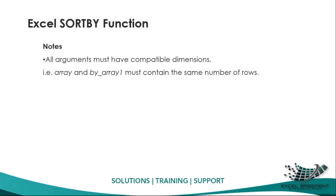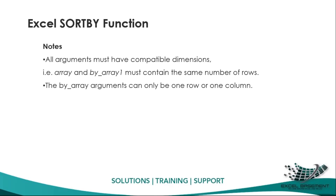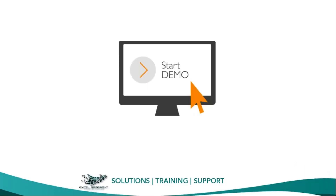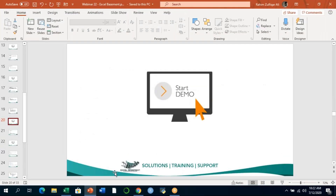Some important notes on SORTBY: all arguments must have compatible dimensions, meaning the array and by_array must contain the same number of rows — equivalent data counts. The by_array argument can only be one row or one column. The sort_order argument can only be minus 1 for descending or 1 for ascending; if no value is provided, SORTBY uses ascending order by default.